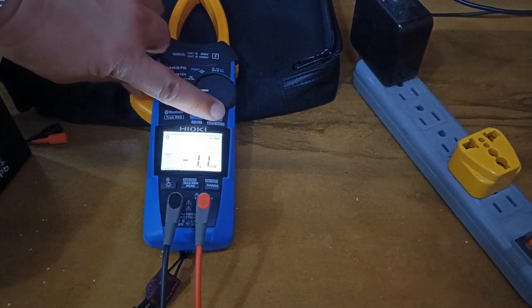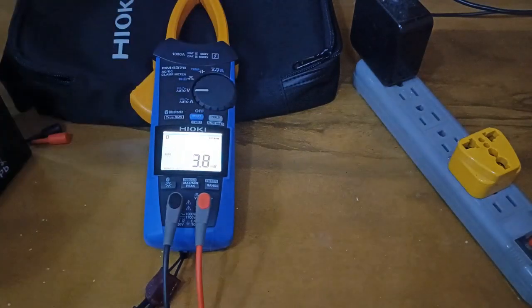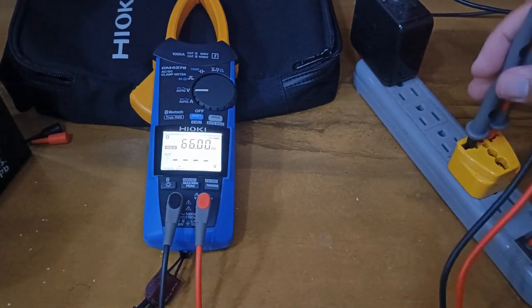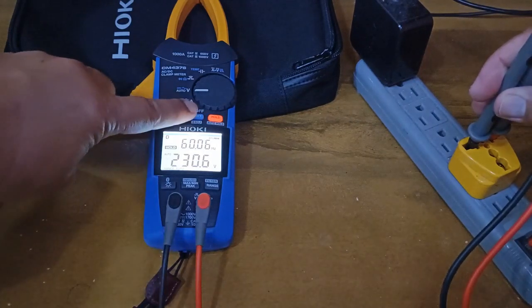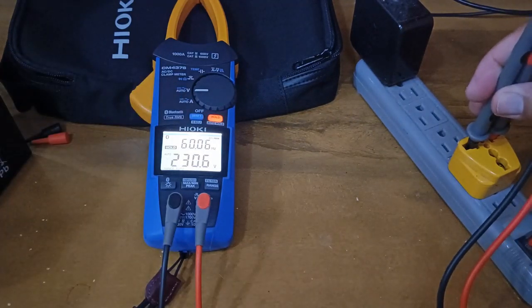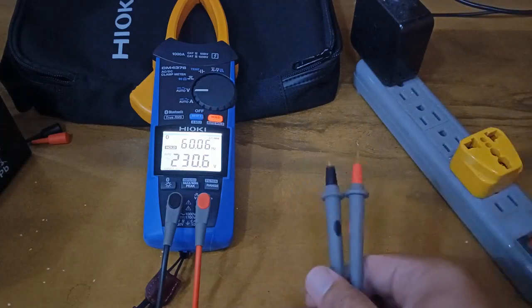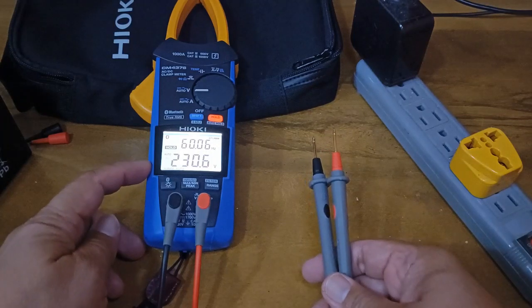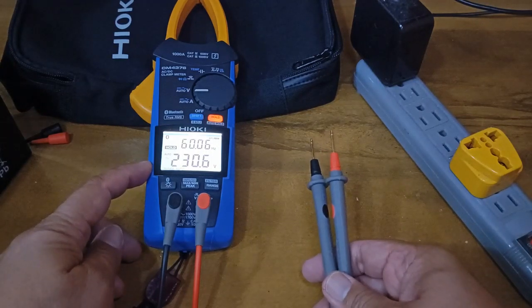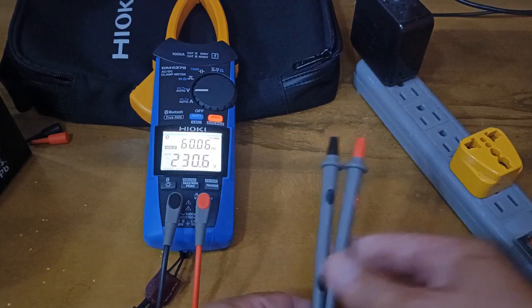Using the auto hold function at the voltage measurement, once the value stabilizes, the hold button flashes red, and now I can remove the test leads from the test points and simply read the value that is retained on screen. That's 230.6 volts AC, 60.06 hertz.